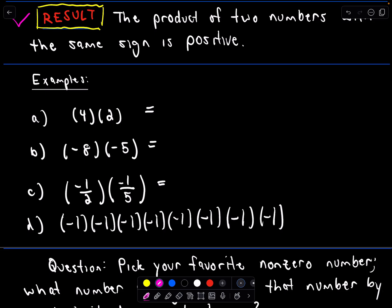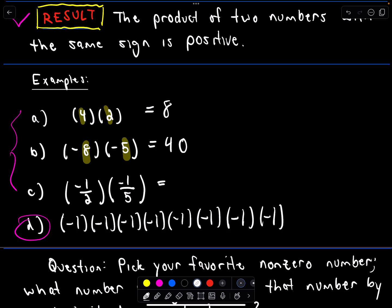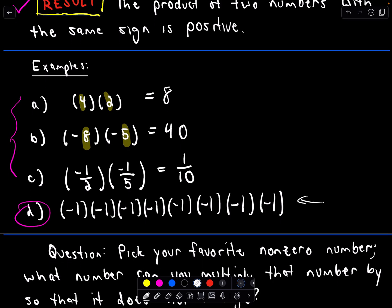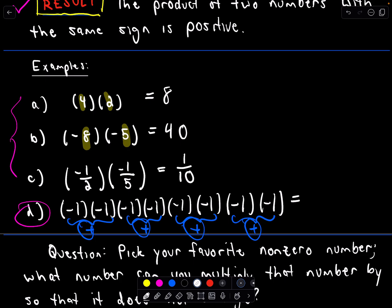Just like before, in examples A, B, and C, I've got either two positive numbers or two negative numbers multiplied together, so in each case I know I'm going to get a positive number. Four times two is eight. Eight times five is 40. One-half times one-fifth is one-tenth — recognizing that all of these are going to be positive. For example D, I've got all these negative ones multiplied together. I pair them up: negative one times negative one is positive, again and again. So ultimately it's a positive times a positive times a positive times a positive, giving me positive one.